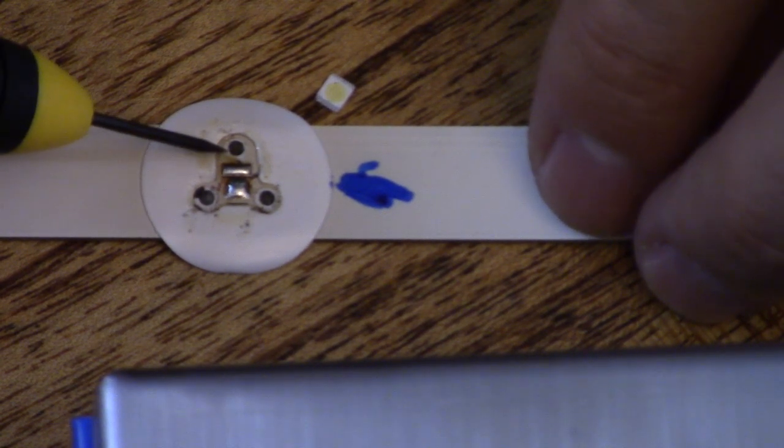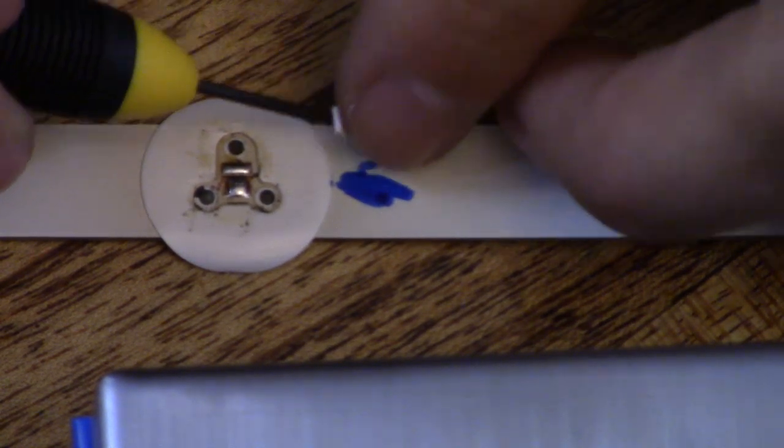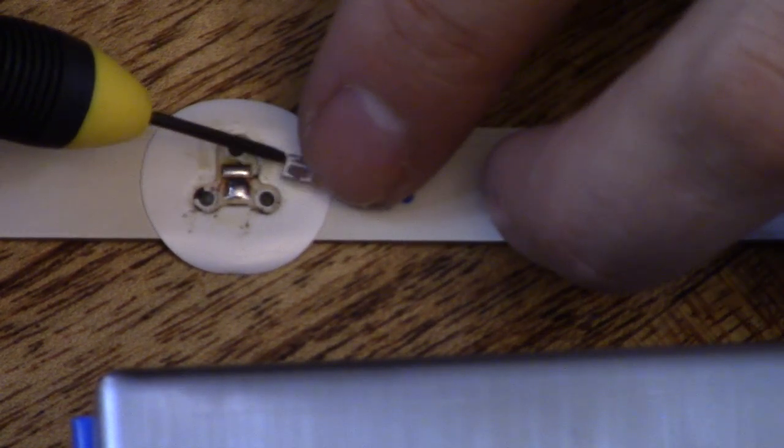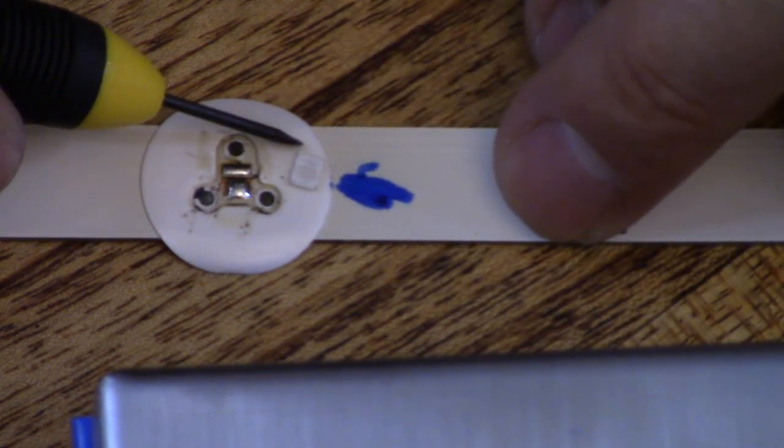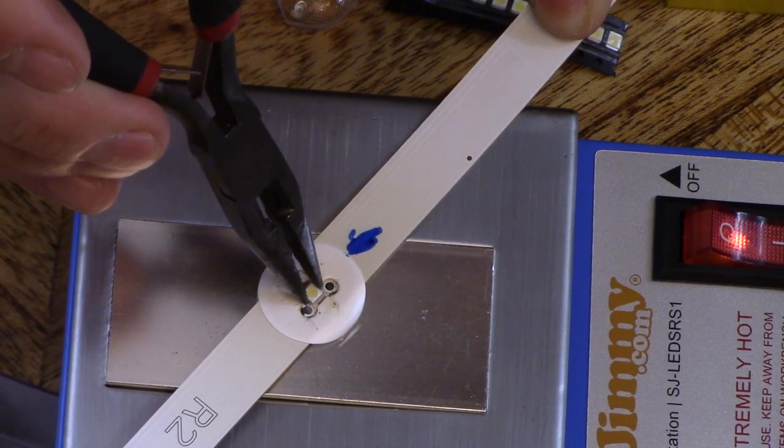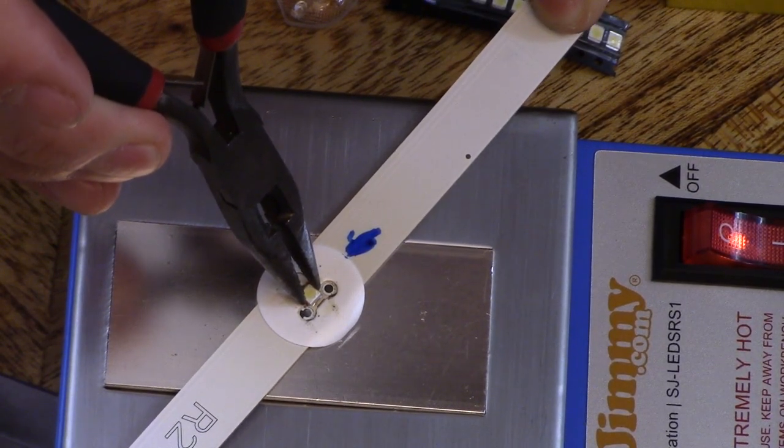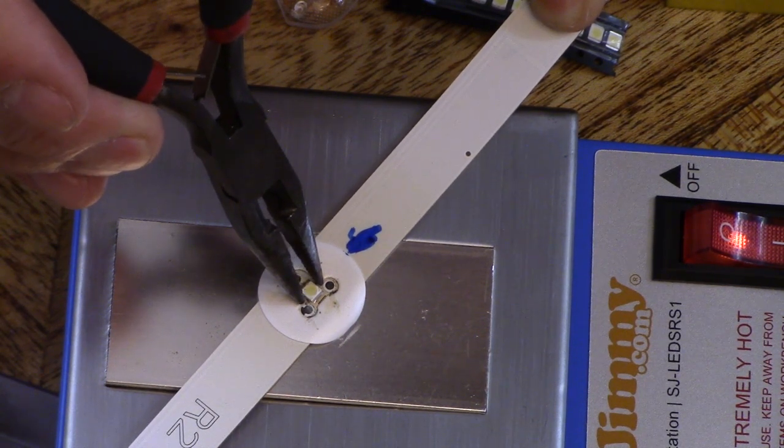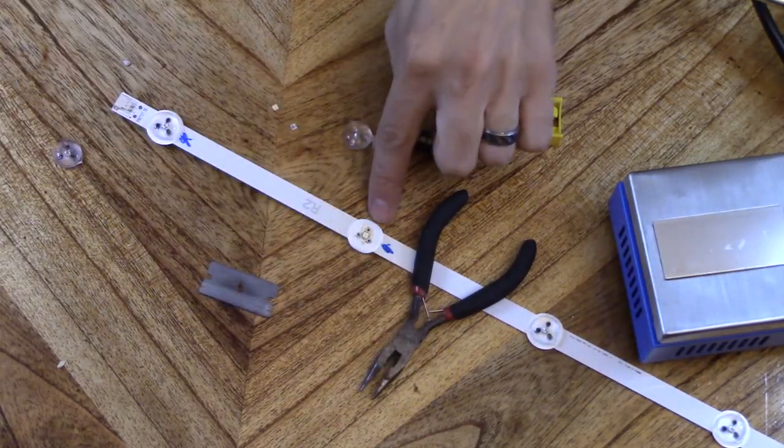You'll notice on the LED strip one solder pad is bigger than the other solder pad. If you take a look at the LEDs that they give you, one side contact is bigger than the other contact side. So we're going to set it down and hold it there for a couple seconds until it falls into place. There we go.